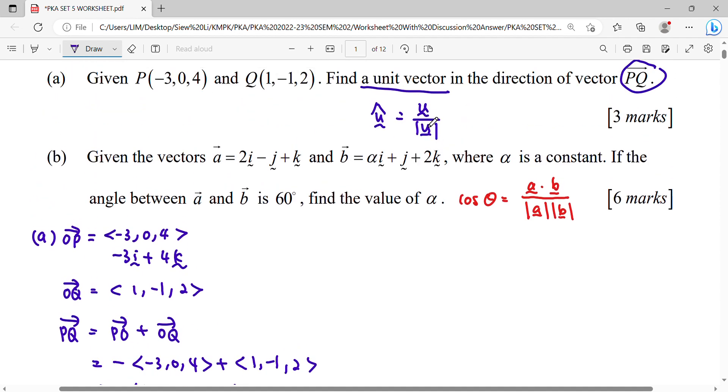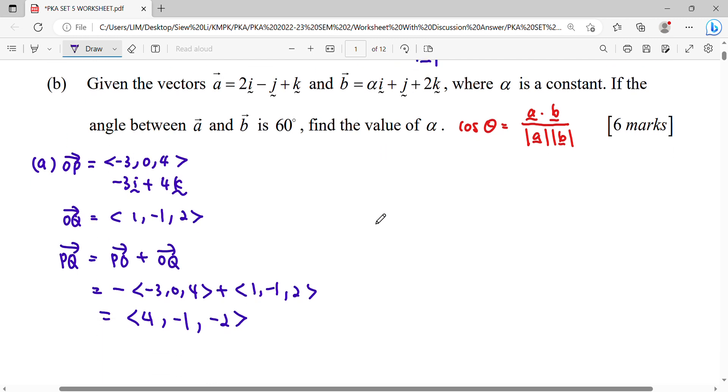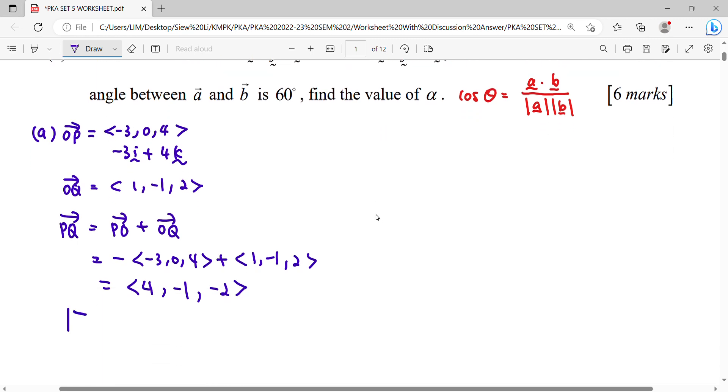After we get this vector, second step, we find out what is magnitude. Magnitude of PQ will be square root of X square plus Y square plus Z square. What's your X? 4. Y, negative 1. Z, negative 2.